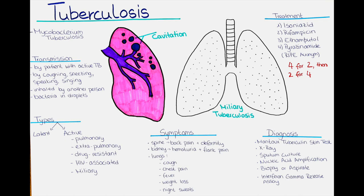I just want to highlight again, to make it absolutely clear, that TB is not spread through casual contact, such as shaking hands, sharing food or drinks, or through contact with surfaces or objects. The bacteria have to reach another person's lungs to lead to an infection.